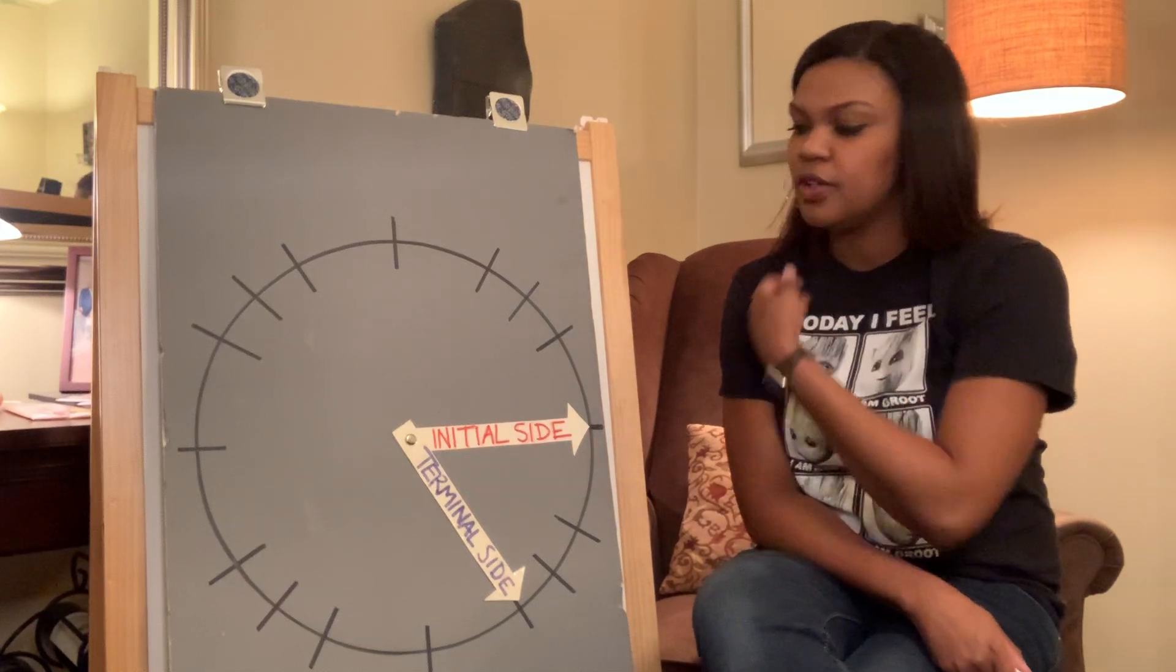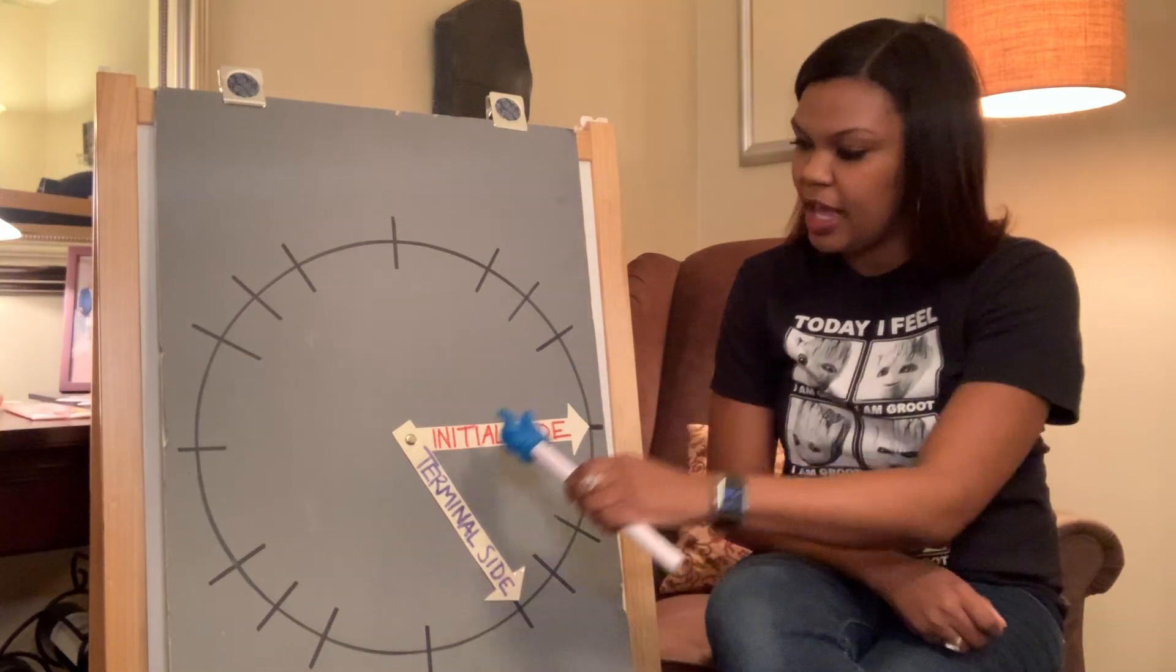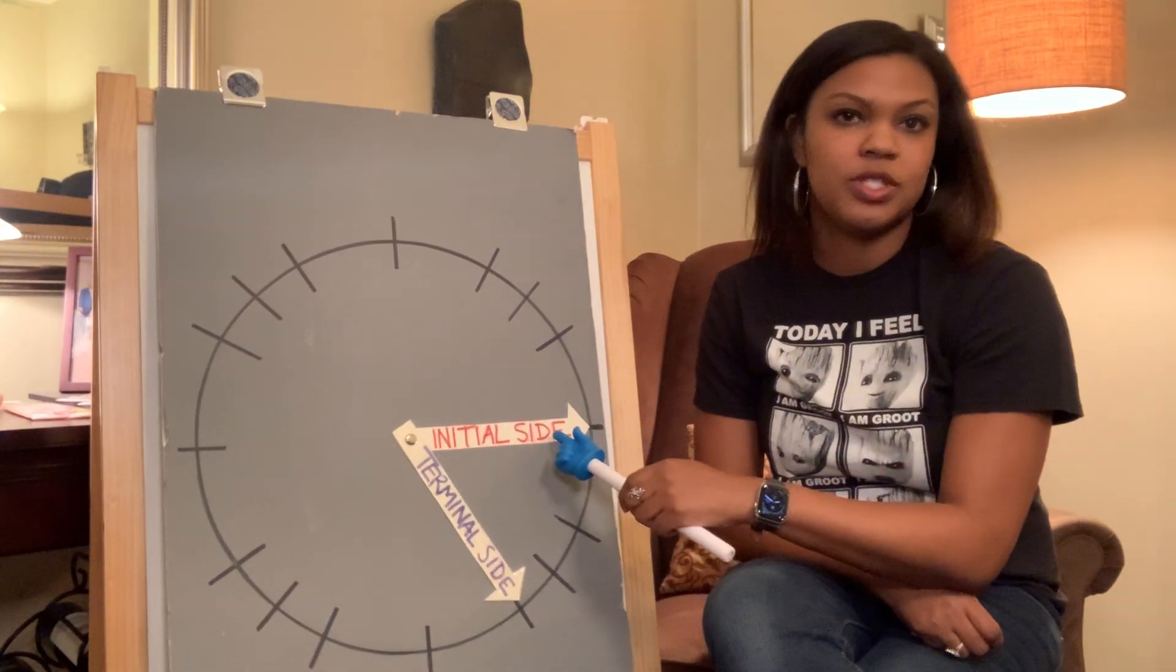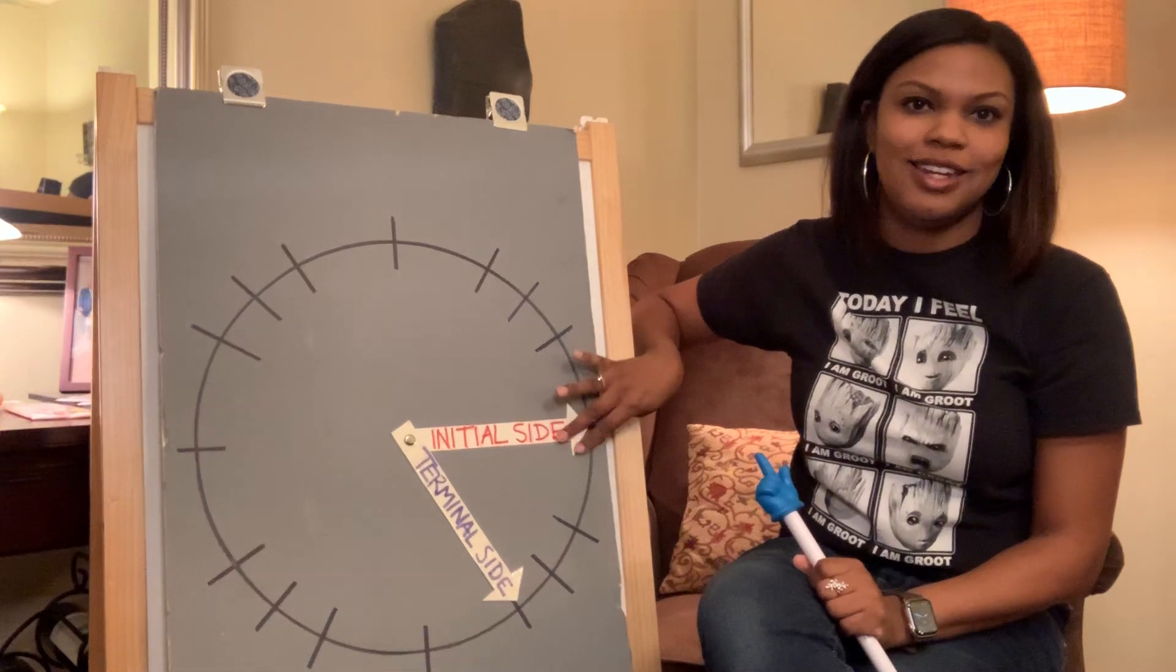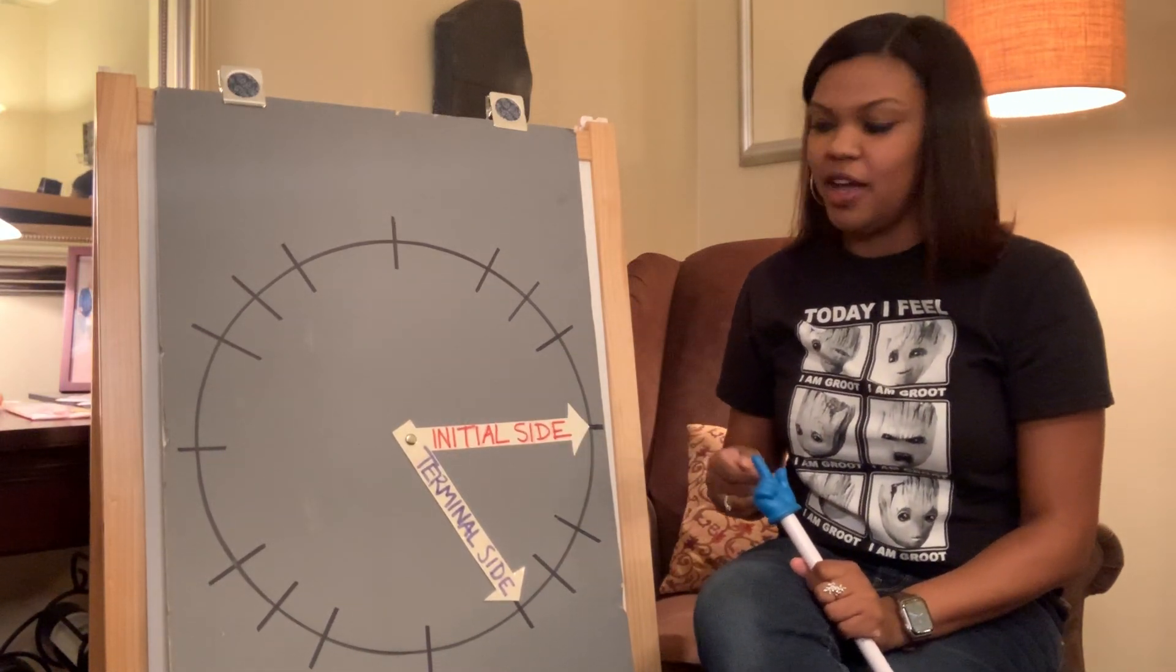In rotating circles in trigonometry, we have what's known as the initial side. Notice how the initial side does not move. This will always stay as the initial side.